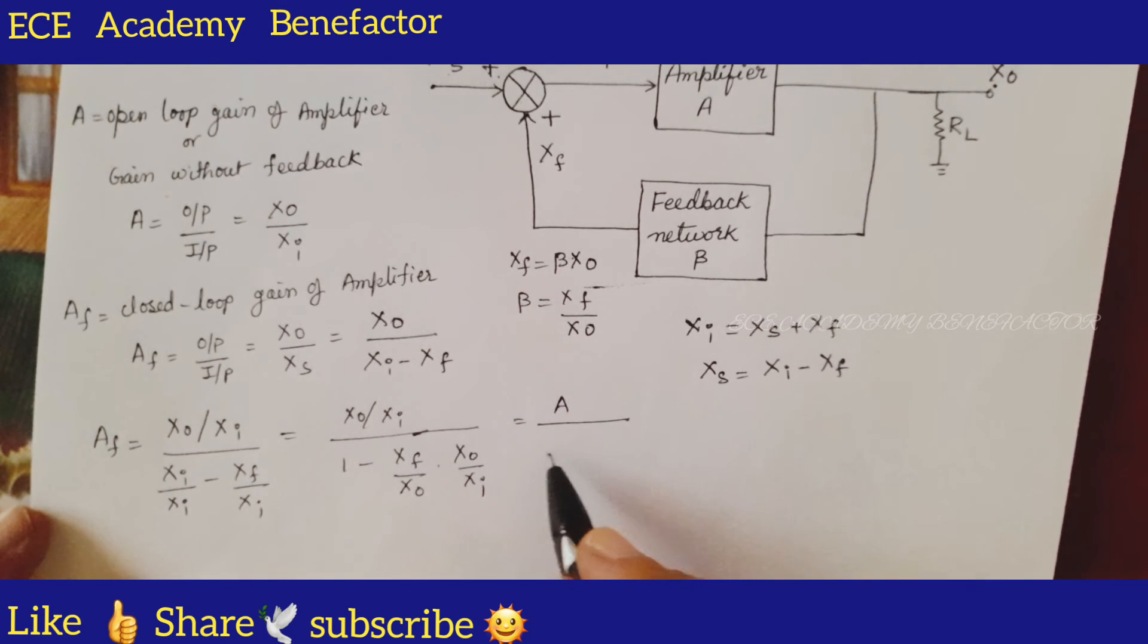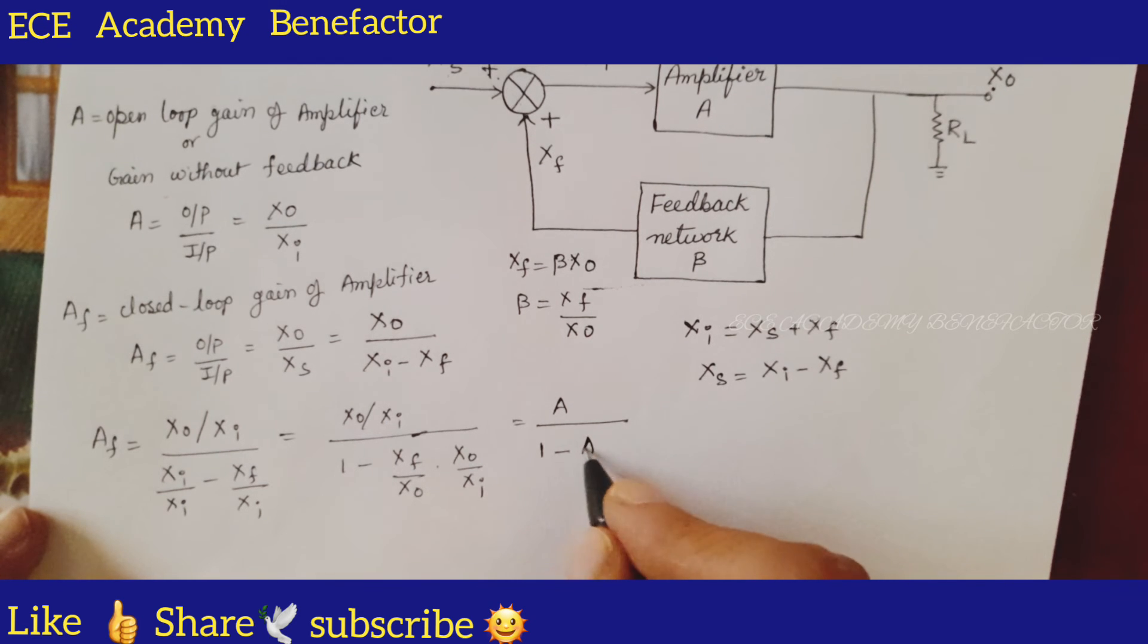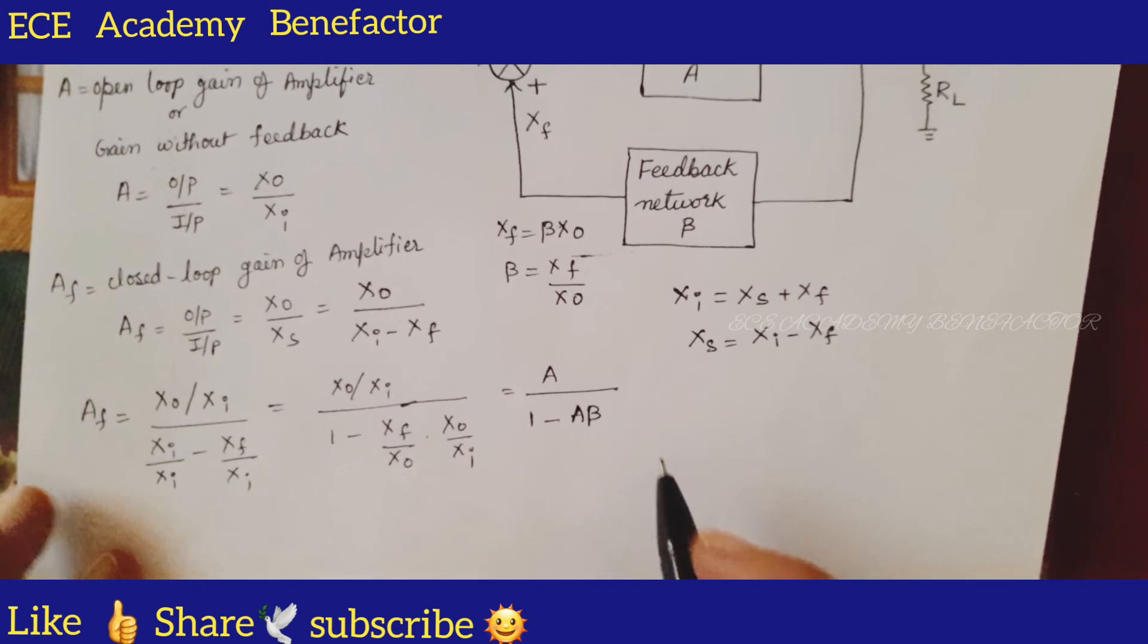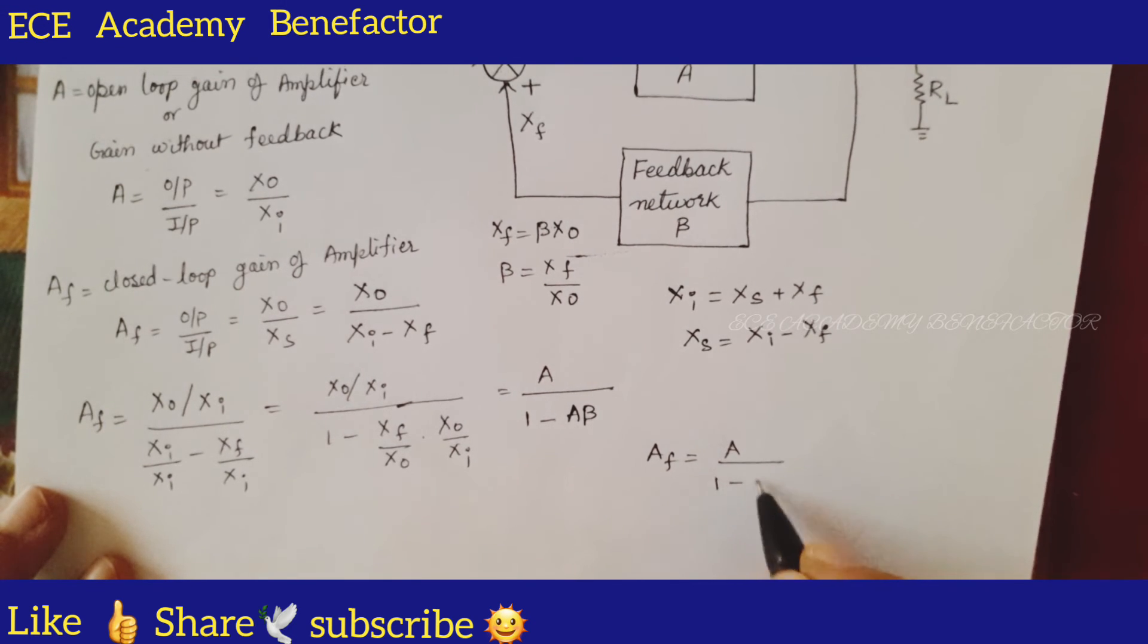A divided by [1 minus... Xf by Xo is beta. So you got A beta. You got the equation of positive feedback: Af is equal to A divided by (1 minus A beta).